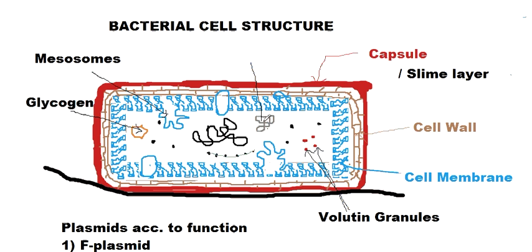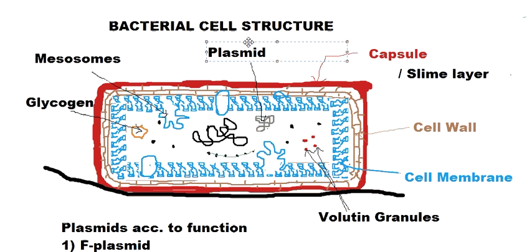Plasmids are present in bacteria. These plasmids are nothing but some extra genetic material which the bacteria can take inside them by the process of transformation, which we will discuss in a later video. By this process the bacteria can take in the plasmids.